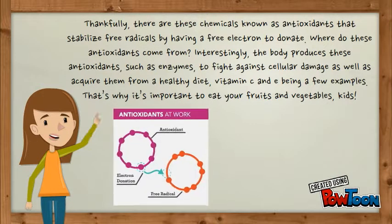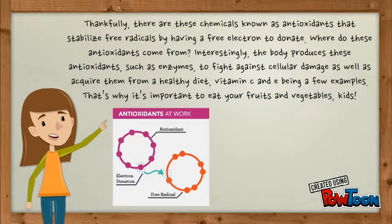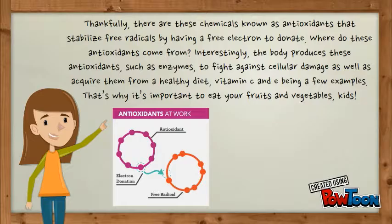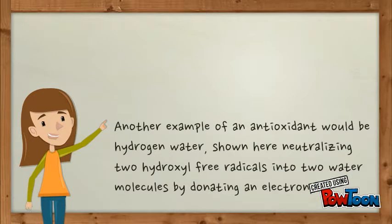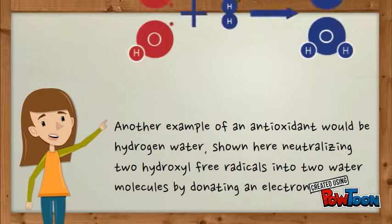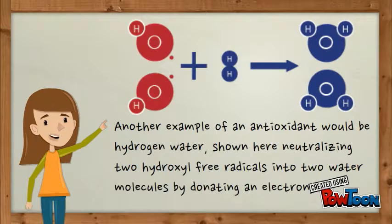Thankfully, there are chemicals known as antioxidants that stabilize free radicals by donating a free electron. The body produces antioxidants, such as enzymes, to fight against cellular damage, and we can also acquire them from a healthy diet — vitamins C and E being a few examples. That's why it's important to eat your fruits and vegetables. Another example of an antioxidant would be hydrogen water, shown here neutralizing two hydroxyl free radicals into water molecules by donating an electron.